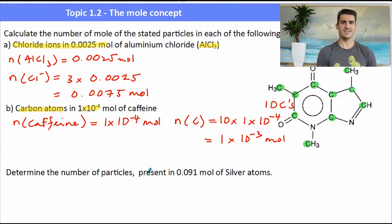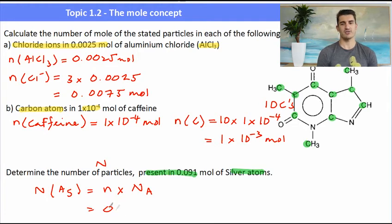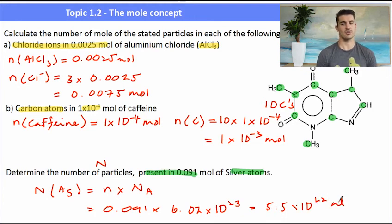Determine the number of particles present in 0.091 mole of silver atom. So this one's actually a little bit easier. We just need to use Avogadro's number, determine the number of particles that is big N, and we multiply that by the mole times by Avogadro's number, which is 0.091, multiplied by Avogadro's number 6.02 times 10 to the 23, which will give us our value. 5.5 times 10 to the 22, and our unit is atoms because we're talking about silver atoms.